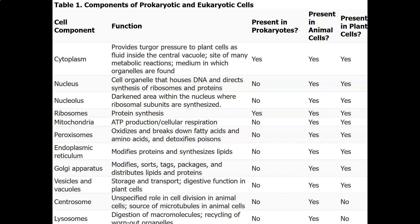Plants have cell walls composed of cellulose. This table is a comparison of prokaryotic and eukaryotic cells. Remember, if they're prokaryotic, they lack a nucleus and they lack membrane-bound organelles. Rather than going through the entire table, I just want to circle all of the structures that are found in both.